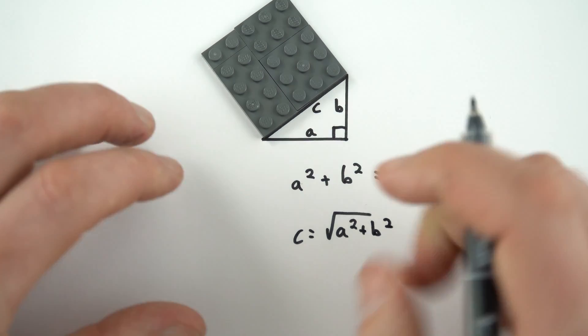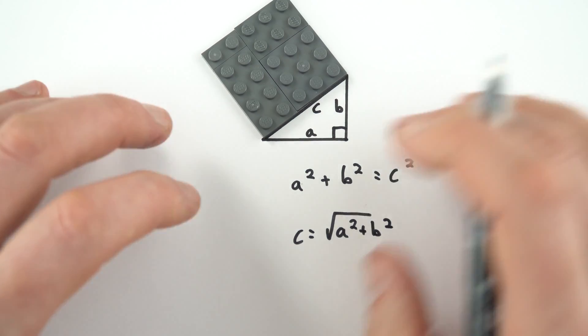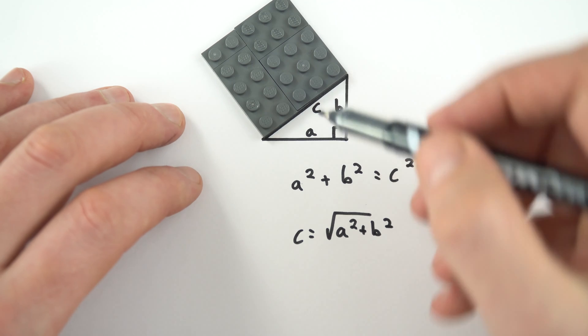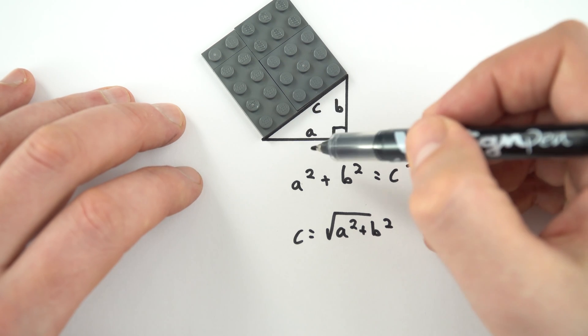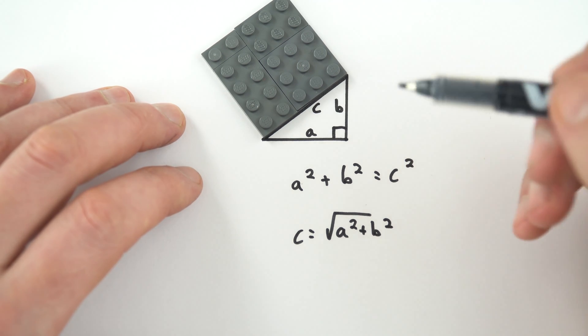Now this is a really useful thing — it's called Pythagoras and it comes up all the time. It allows you, if you know two sides of a right-angled triangle, to work out the third.